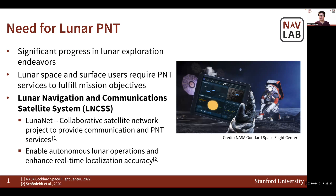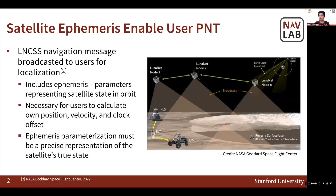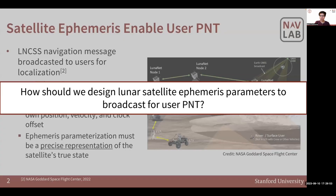Overall, a satellite-based navigation system will enable autonomous lunar operations and enhance real-time localization accuracy. The satellites that are part of this network broadcast a navigation message to users for localization. This message includes satellite ephemeris, which are the parameters representing a satellite state in orbit. These ephemeris are necessary for users to self-localize, so ephemeris parameterization must be a precise representation of a satellite's true state. The question we are tackling in this work is how should we design lunar satellite ephemeris parameters to broadcast for user position, navigation, and timing?